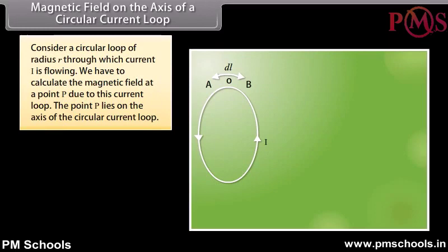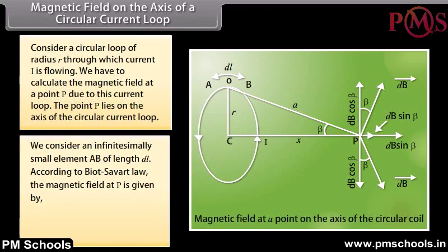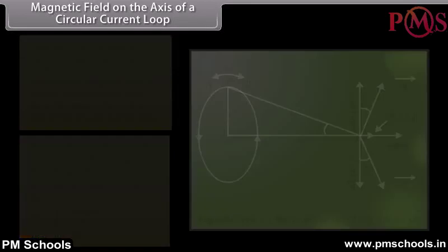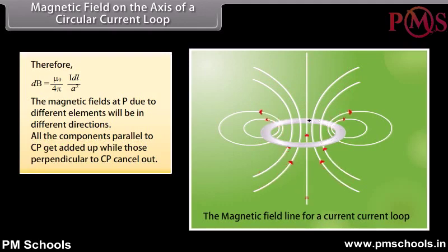Magnetic field on the axis of a circular current loop: Consider a circular loop of radius R carrying current I. We calculate the magnetic field at point P on the axis of the loop. For an infinitesimally small element AB of length dL, by Biot-Savart law the magnetic field at P is dB = (μ₀/4π) · I·dL·sinθ / A². Since θ = 90° and sinθ = 1, dB = (μ₀/4π) · I·dL / A².